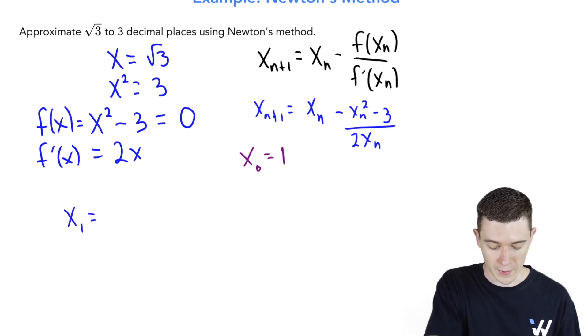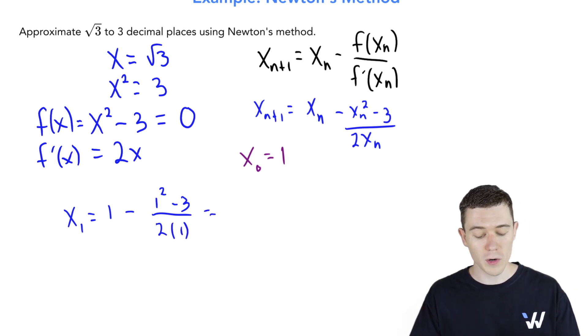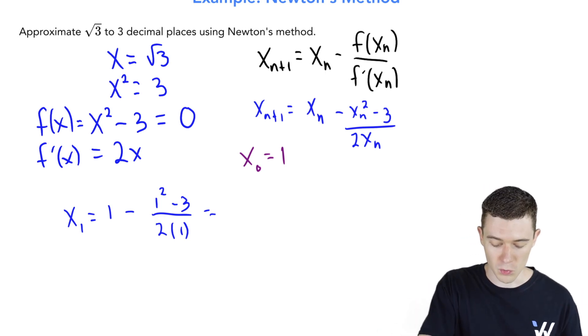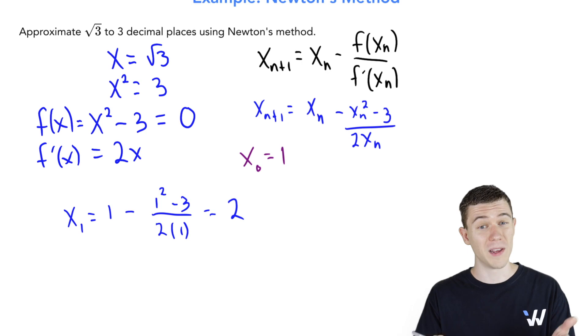This means x1 will be x naught, which is one, minus our function evaluated at one, one squared minus three over two times one. If you crunch that number quickly, one squared is one minus three is negative two over two is negative one. One minus minus one is two. Okay, we're getting closer, but certainly two is not a good approximation for the square root of three.